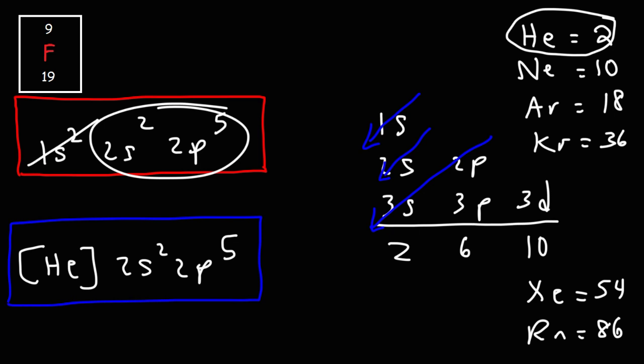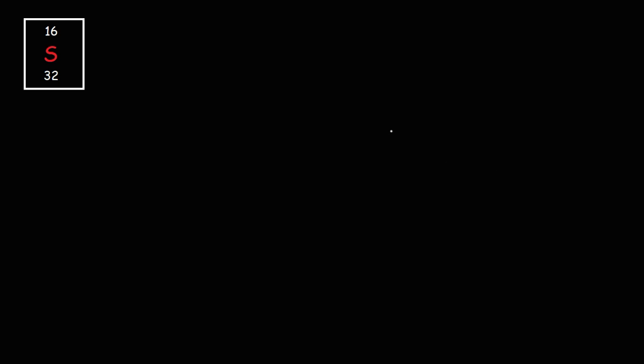Everything else we write after helium: 2s2 and 2p5. So this is the answer — that is how we write the electron configuration of fluorine using noble gas notation. For practice, let's try a few more examples. You can pause the video to try it yourself, then play to check your answer.